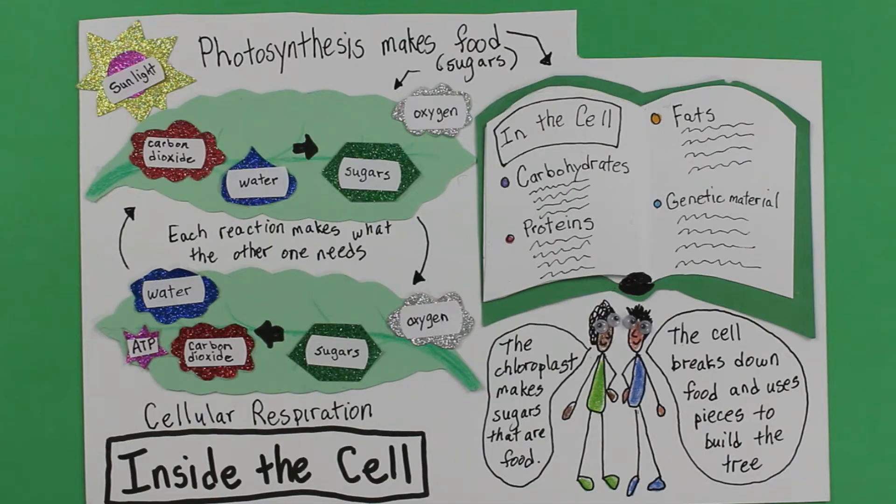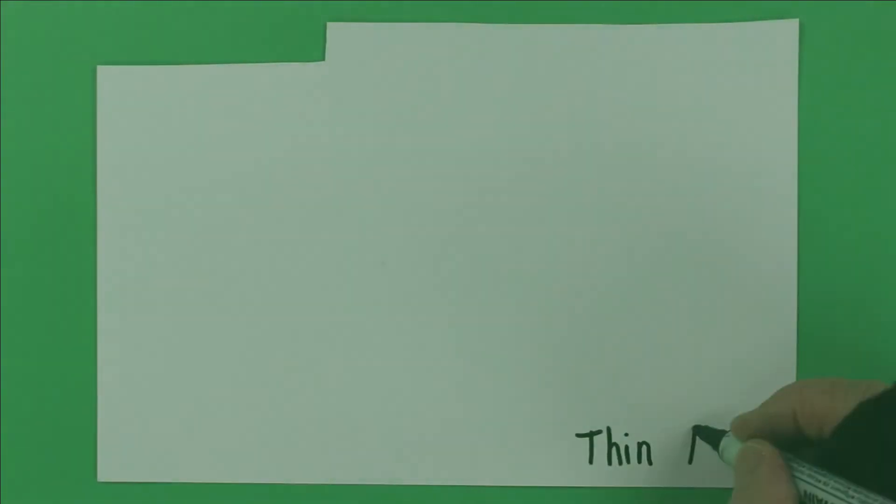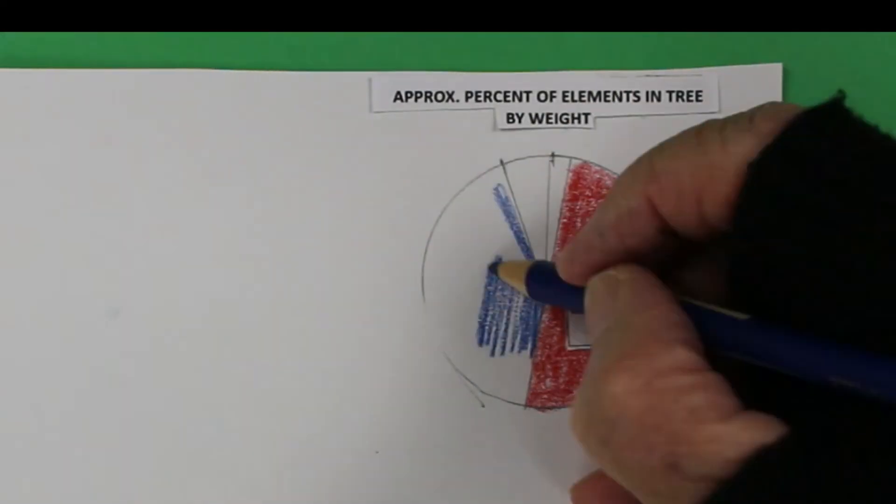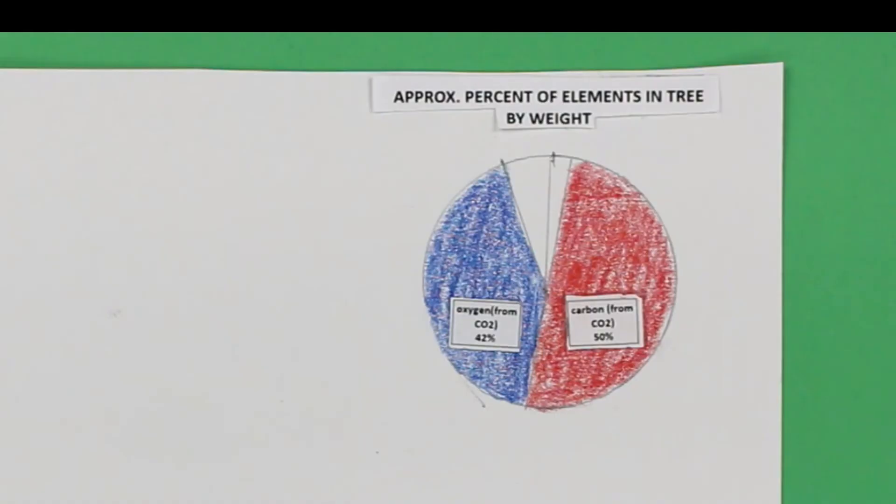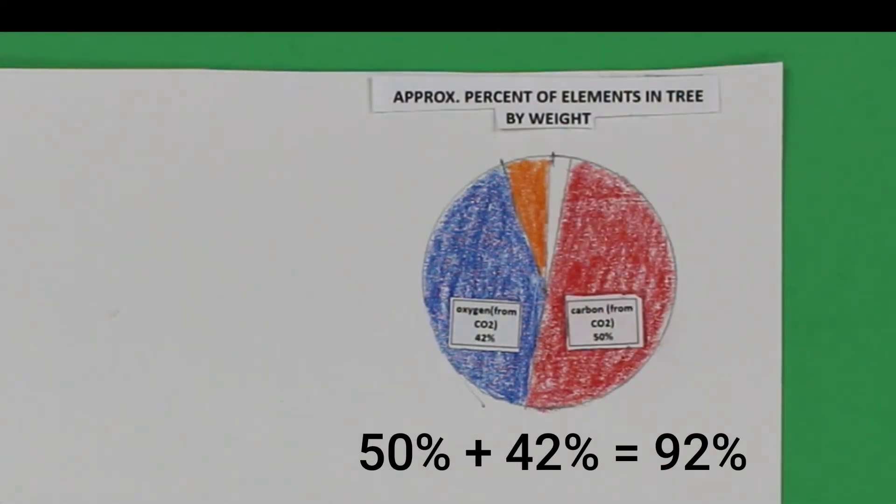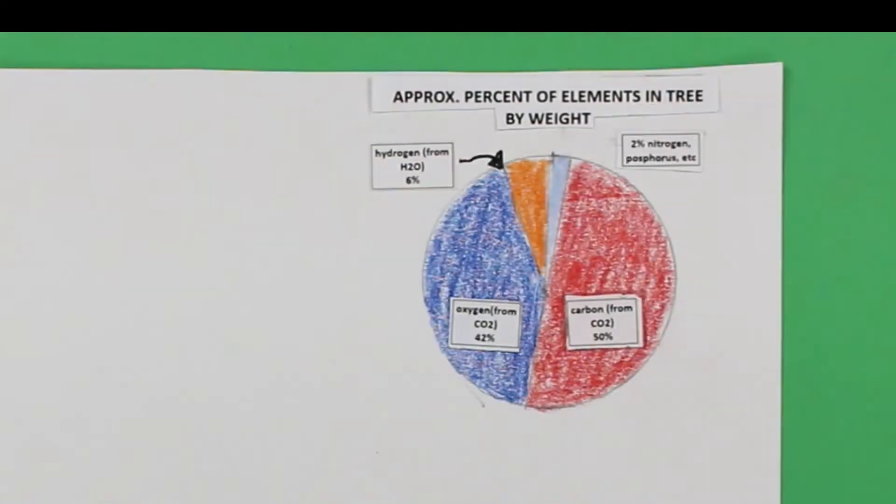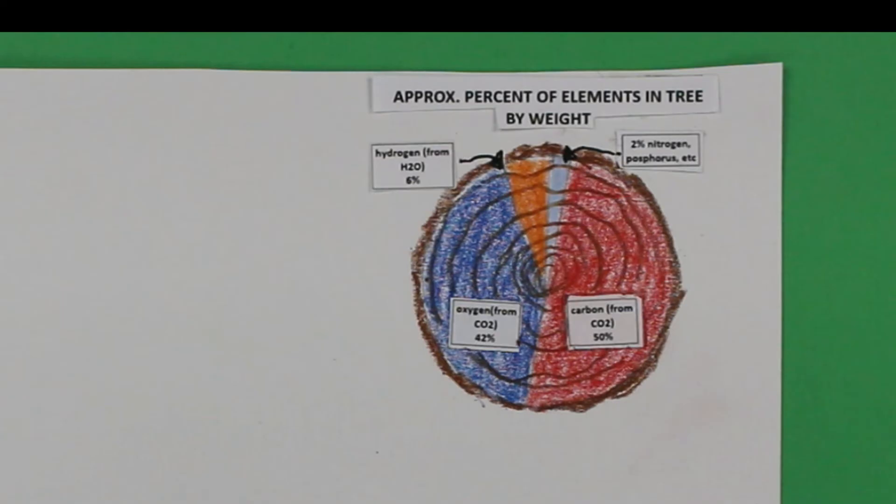Photosynthesis used carbon dioxide and water to make food that made the tree. If we could separate out the atoms in Van Helmont's dried tree and weigh them separately, we'd find about 50% of its mass is carbon and 42% is oxygen. Studies have shown that this oxygen came from the carbon dioxide. That means 92% of the tree's mass came from carbon dioxide, gas, in the air. Although the tree has lots of hydrogens from water, each one is very light, so they're only 6% of its mass. Elements like nitrogen and phosphorus are crucial to making proteins in genetic material, but they're only 2% of the tree's mass.